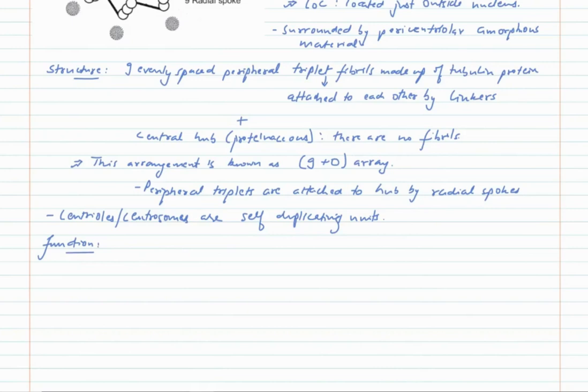In animal cells, centrosomes play an important role in cell division by arranging spindle fibers between the two poles of the cell.